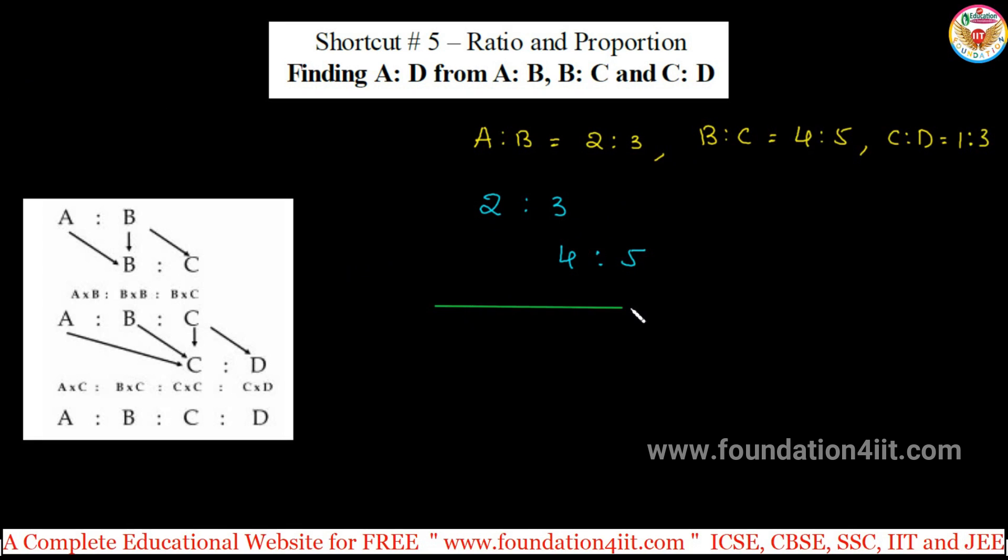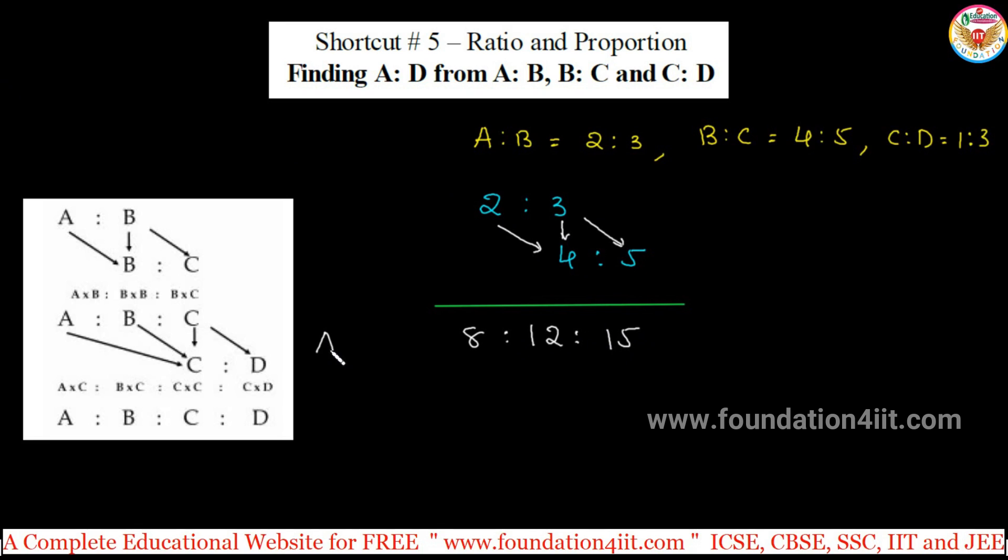So that means we will multiply this. So 2 into 4 is 8, again 3 into 4, 3 fours are 12, again 3 into 5 is 15. This up to here is A:B:C within previous trick.